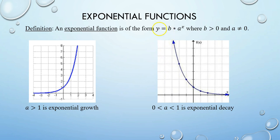These are functions of the form y equals b times a to the x. The key component that makes something exponential is that the variable x is an exponent. b has to be greater than 0 and a cannot equal 0. What defines an exponential function is your variables in the exponent. When the base a is greater than 1, that means we have an increasing exponential function, or exponential growth as it's called.